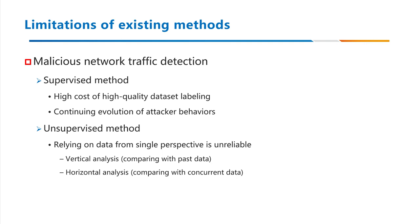Unsupervised methods alleviate the need for labeled data, but existing methods are often limited to detecting anomalies either in vertical perspectives through historical comparisons or in horizontal perspectives by comparing with concurrent entities. Relying on data from a single perspective is unreliable, and it limits the model's accuracy and generalizability.